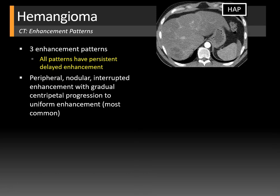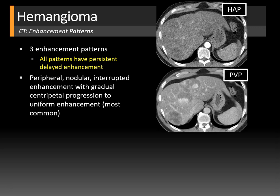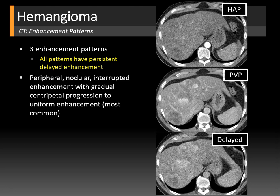Here's another example of that peripheral nodular enhancement pattern. On the hepatic arterial phase image, multiple hemangiomas show peripheral nodularity progressing centrally on the portal venous phase. The delayed image shows persistent enhancement with no washout — the lesions are not de-enhancing or becoming darker than the surrounding hepatic parenchyma.